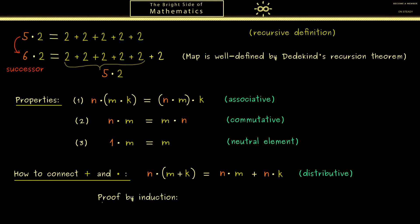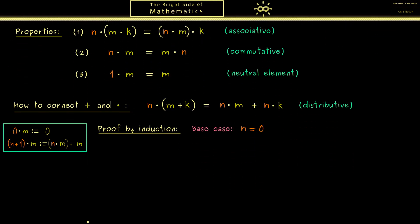Now the variable we do the induction for should be again n. Therefore the base case would be starting with n is equal to 0. Of course for the induction proof we will need the recursive definition of the multiplication. Therefore you find it here in the red box again.